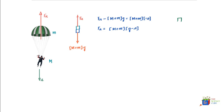For the parachute, the forces acting on it are: F_A acting in the upward direction, mG acting in the downward direction — where mG is simply m times G since we're making the free body diagram of the parachute only — and the pull due to the person, labeled F_P, also acting in the downward direction. Applying Newton's second law: F_A is positive (upward), minus mG (downward), minus F_P (downward).